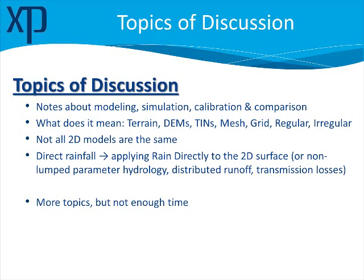Another point I want to bring up is that not all 2D models are the same. There are different solution schemes and it's important for the user and reviewing agencies to know the difference. Finally, we want to discuss the relatively new concept of direct rainfall — that is, applying rainfall directly to the 2D surface mesh. This is a departure from the longstanding tradition of using lumped parameter hydrology, discussing distributed runoff and transmission losses.